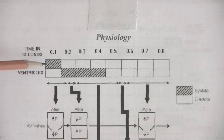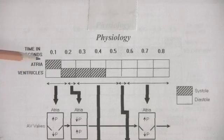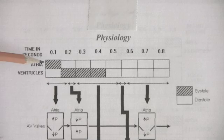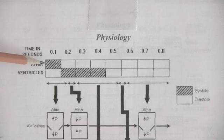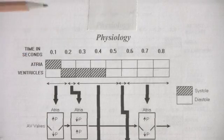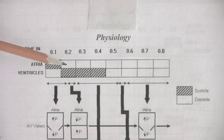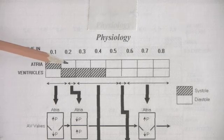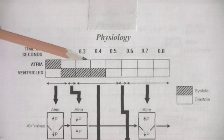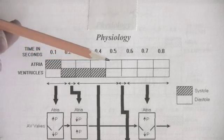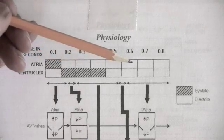In the atria, in the first tenth of a second, the atria are in systole. And then for the remaining tenths of a second in the cardiac cycle, the atria are in diastole.